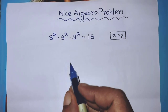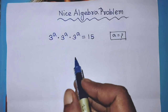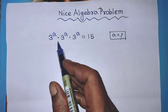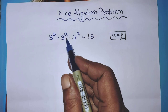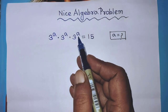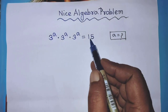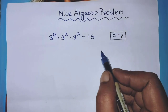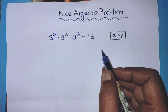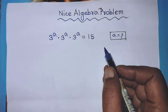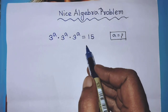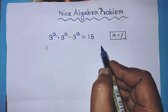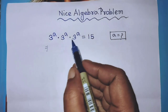Hello guys, you are welcome to solve this math problem, which is 3 to the power a times 3 to the power a times 3 to the power a is equal to 15. Today I am telling you how to find the value of a from this equation.